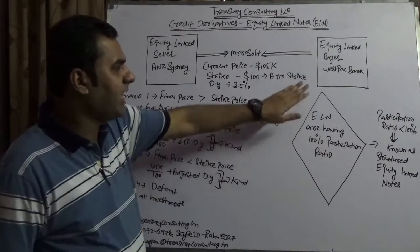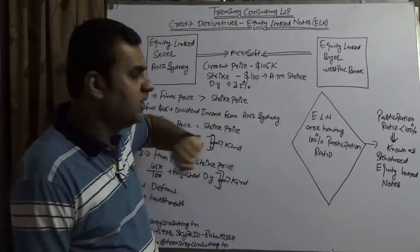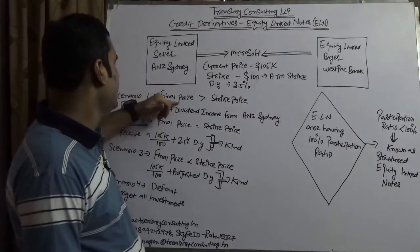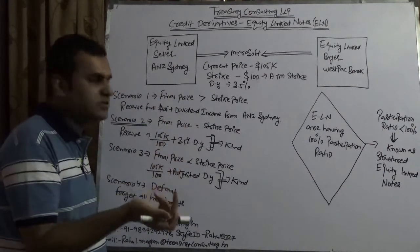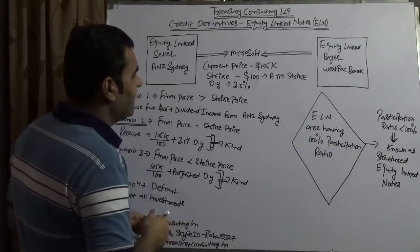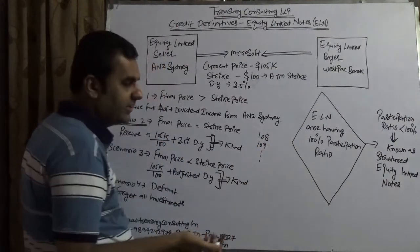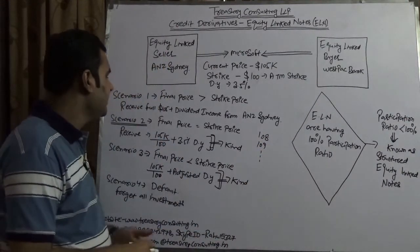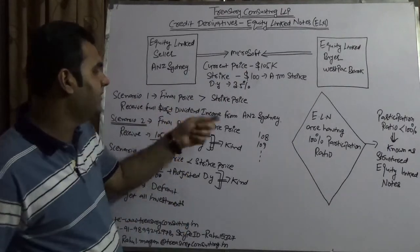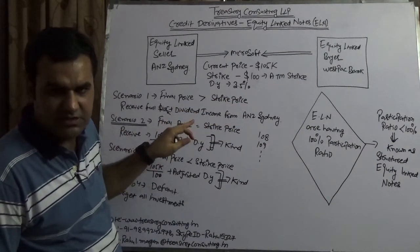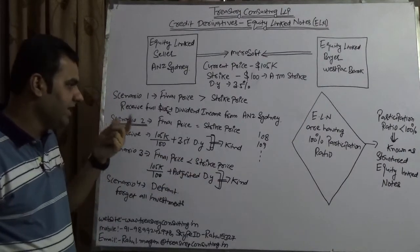On maturity, Westpac would like to increase his income — he is betting just like an option. Scenario one: if the final price on maturity is greater than the strike rate — assuming the final price was 108, 109, or 110, anything greater than 100 — then he would be getting the complete principal of 105K plus the dividend income, which is 3.5 percent on 105K. That is roughly 3.8K, so in total he would be getting approximately 109K.